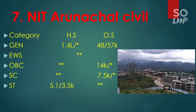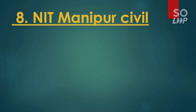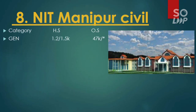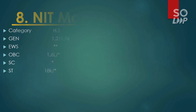The eighth is NIT Manipur, which also has Civil Engineering as the lowest cutoff branch. For General, it is 47,000. For EWS, there is no seat. For OBC, it is 14,000. For SC, it is 7,200. There is no ST seat for other state students.